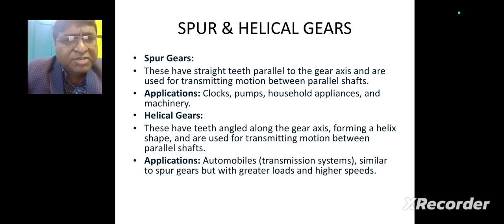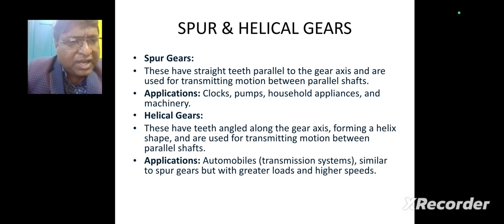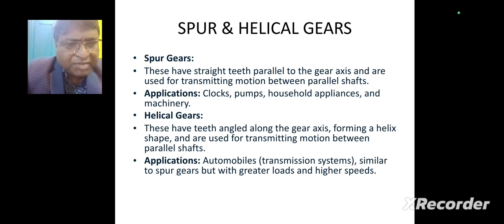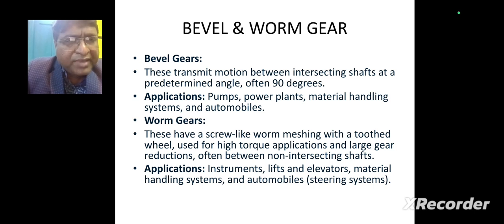What do spur and helical gears mean? Spur gears have straight teeth parallel to the gear axis and are used to transmit motion between parallel shafts. Applications include clocks, pumps, household appliances, and machinery. Helical gears have teeth angled along the gear axis forming a helix shape and are also used for transmitting motion between parallel shafts. Applications include automobile transmission systems, similar to spur gears but handling greater loads and higher speeds.